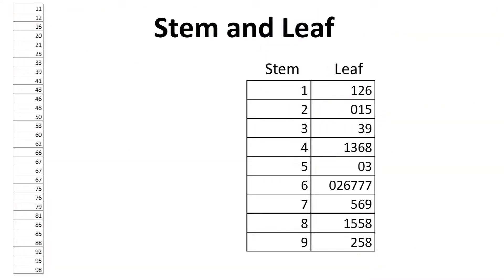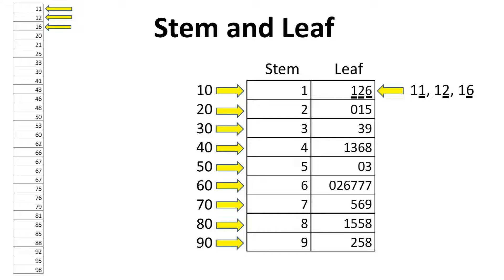First we have a stem and leaf plot. The way this works is we have a digit in the 10th spot and this is the stem of the graph. For every digit in the first digit or one spot we place that number in another column called the leaf. So 11, 12, and 16 corresponds to the stem of one and a leaf of one, two, and six.